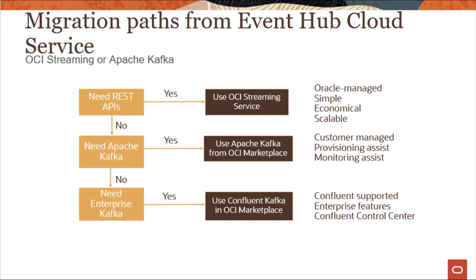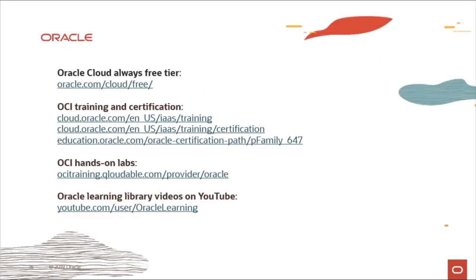For migration from Event Hub Cloud Services: if you need REST APIs, use OCI Streaming Service — Oracle Managed, simple, economical, and scalable. If you need Apache Kafka, use Apache Kafka from the OCI Marketplace, which is customer-managed with provisioning assistance. If you need enterprise Kafka, use Confluent Kafka from the OCI Marketplace, which offers enterprise features and the Confluent Control Center. Thank you for watching this lecture, I hope it was useful.